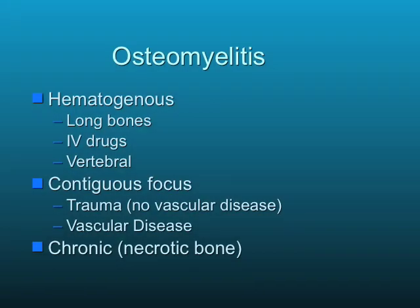Let's go ahead and get started. You can break down osteomyelitis into two categories. It makes it easier to remember and helps you figure out what to do with them. The first one is hematogenous osteomyelitis. It usually occurs in the long bones, and is treated with intravenous antibiotics. IV drug users may also get hematogenous osteo, and you can also have discitis or vertebral osteomyelitis of hematogenous origin.